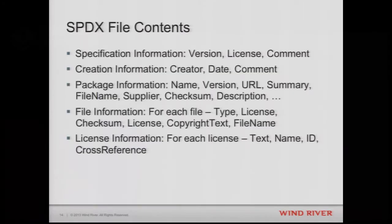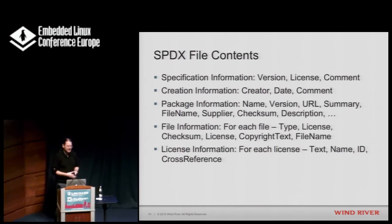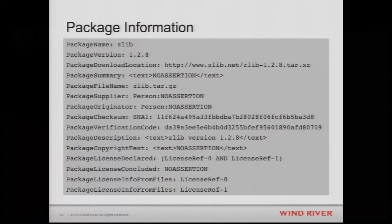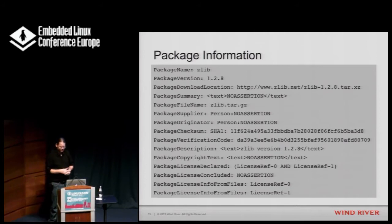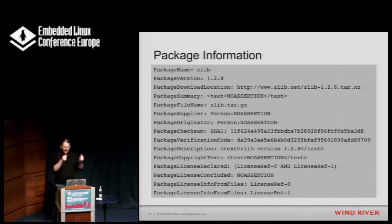A quick overview of what SPDX files themselves actually contain — there are really five sections. First, specification information: which version of SPDX and some metadata around it. Second, who created the individual file. Third, packaging information. Fourth, individual file information. Fifth, the licenses found in the system. The package section shows where the source was downloaded from, and the concluded license defaults to 'no assertion' because an automated system cannot assume what the license is — only a person can conclude it. The declared license is what the package itself stated.